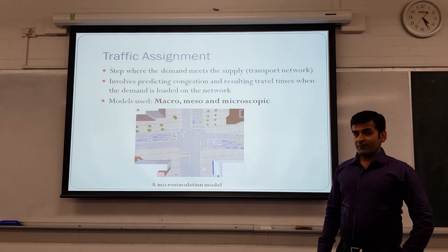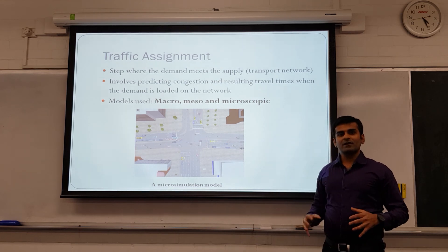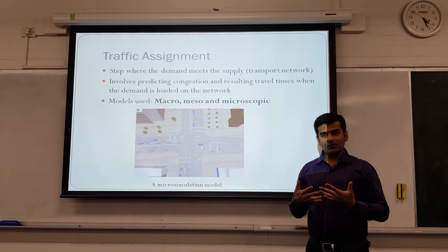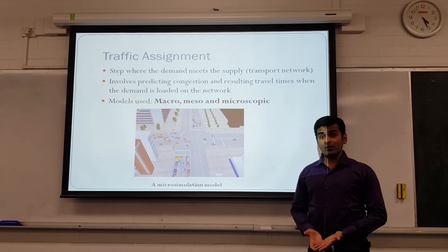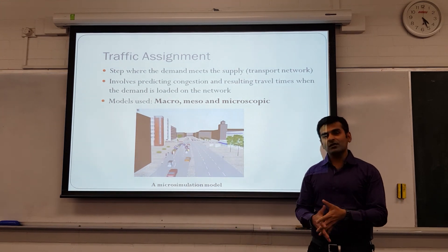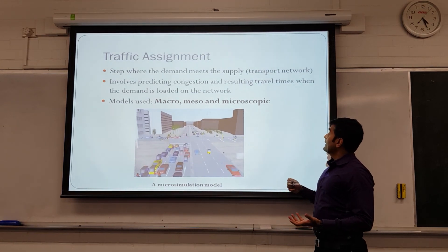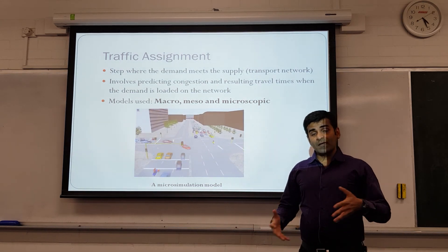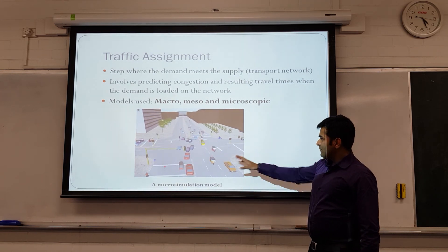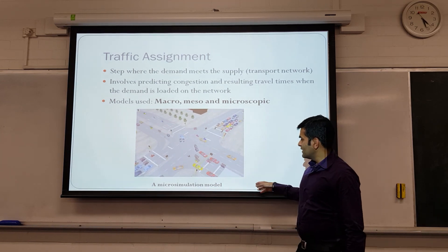The last step is traffic assignment — probably the most interesting part — because this is where whatever demand has been estimated so far is finally loaded onto the supply, which is our roadway network. This step involves predicting congestion: where the bottlenecks will be and what the resulting travel time will be when this demand comes onto the road network. In this visual, we can see how traffic behaves on an intersection, with a big queue visible.